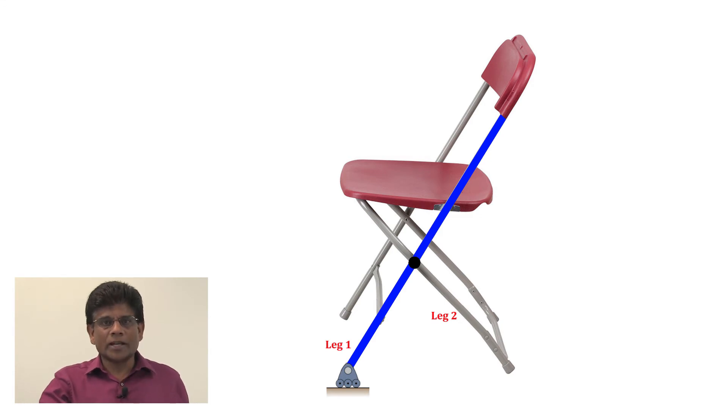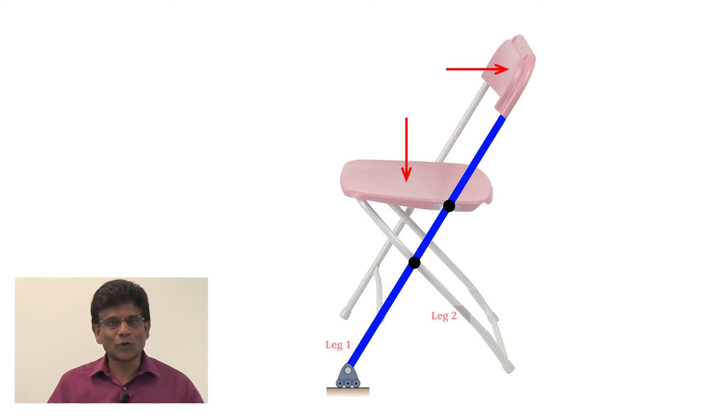This leg is also connected to the seat with a pin joint, so we know there are two more support reactions there. Finally, when someone leans on the backrest, this member is going to experience an applied force on the backrest. So this member has forces applied at four locations. This cannot be a two-force member. This is a multi-force member.